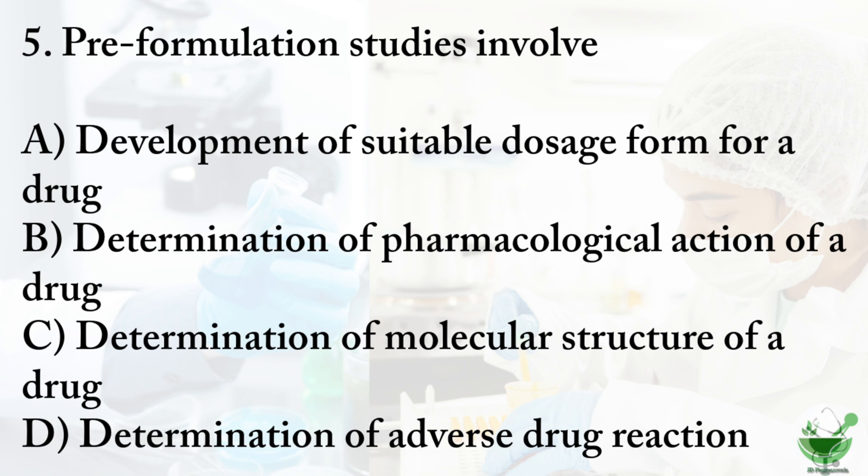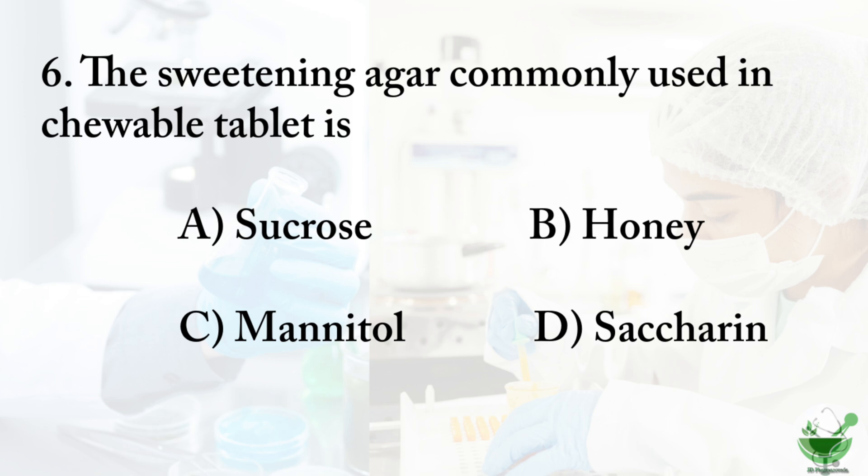Question number five: pre-formulation studies involve — option A: development of a suitable dosage form for a drug, option B: determination of pharmacological action of a drug, option C: determination of molecular structure of a drug, option D: determination of adverse drug reaction. The correct option is A, development of a suitable dosage form for a drug. Formulation development for pre-clinical studies is an essential part of drug discovery; the development process involves pharmacokinetics, efficacy, and safety studies.